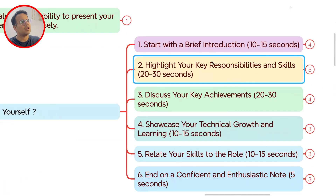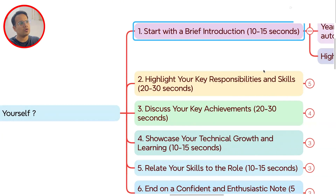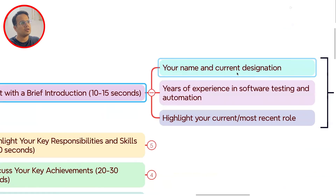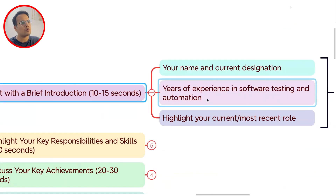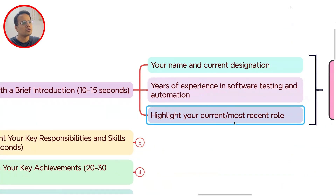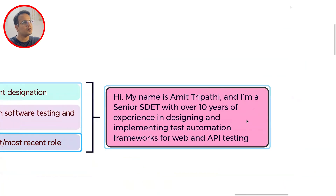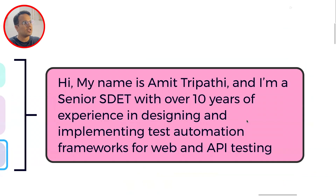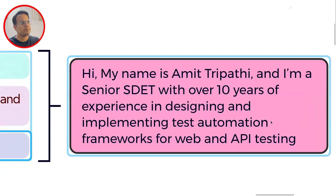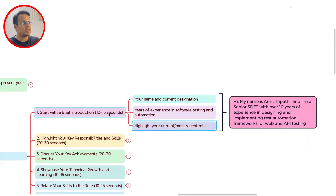First, start with a very brief introduction — your name, current designation, years of experience, and whether it's software testing or automation. You have to highlight your current and most recent role. For example: 'Hi, my name is Amitra Pati and I am a Senior SDET with over 10 years of experience in designing and implementing test automation frameworks for web and API testing.' That introduction should take about 10 to 15 seconds.